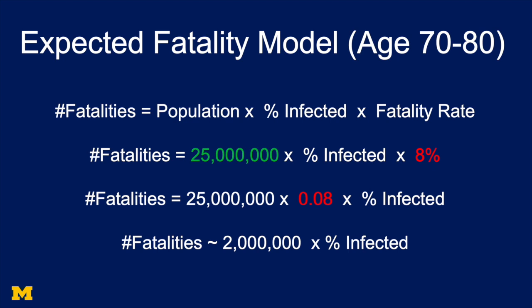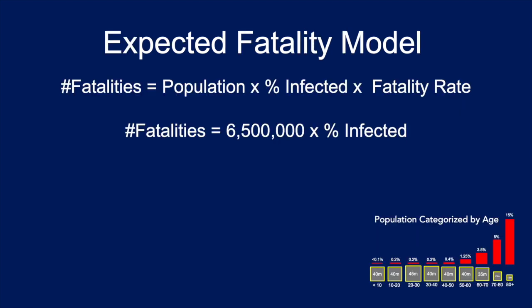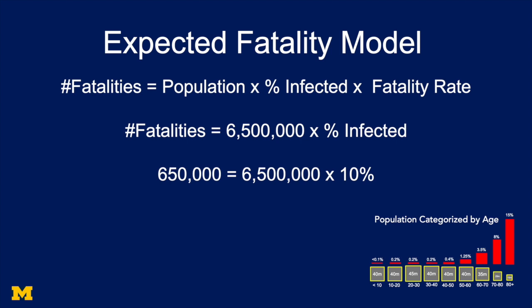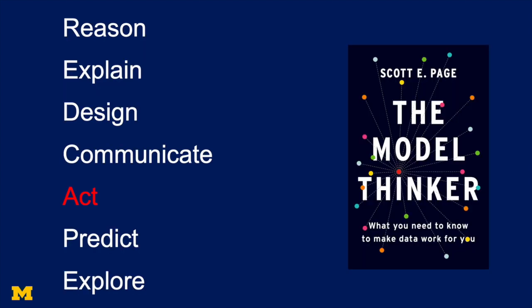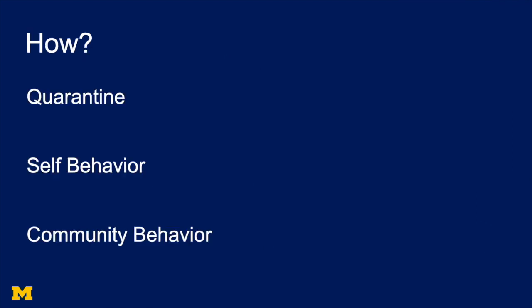To do the full calculation, for each age category we count the number of people and multiply by the fatality rate, assuming the percentage infected is the same across all age groups. If we assume 10% infected, we have 650,000 deaths. If we assume 2% infected, we would have 130,000 deaths. Now let's think about how we can use this model to act. We see that the fatality rate is really high for people 60 and up, and pretty low for people less than that. So what we'd like to do is reduce the infection rate for people in that upper age group.